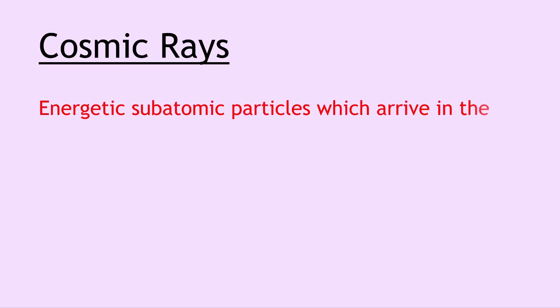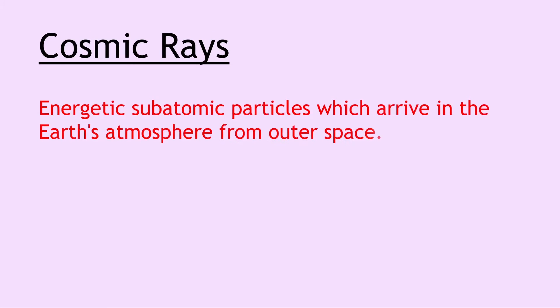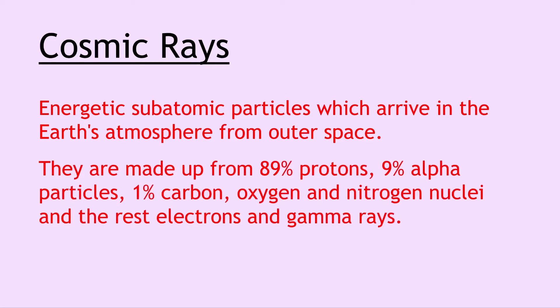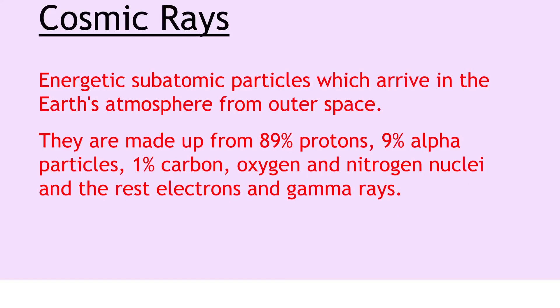Next we have cosmic rays, and these are energetic subatomic particles which arrive in the Earth's atmosphere from outer space. They are made up from 89% protons, 9% alpha particles, 1% carbon, oxygen and nitrogen nuclei, and the rest electrons and gamma rays.